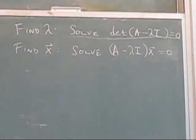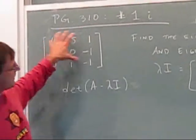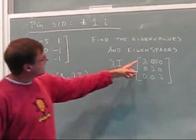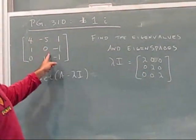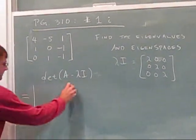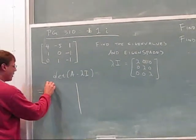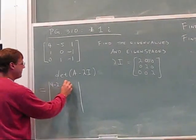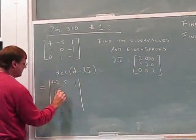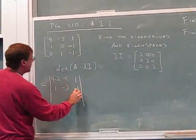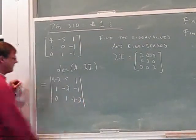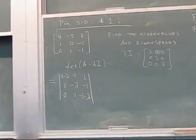The determinant of A minus lambda I is I take this A and I subtract off this lambda I. You can see that the only thing that really changes is you get a lambda subtracted from the diagonal elements. All the rest stays the same. So this is equal to 4 minus lambda, negative 5, 1, 1, 0 minus lambda, negative 1, 0, 1, negative 1 minus lambda. And this is the determinant that I need to take.